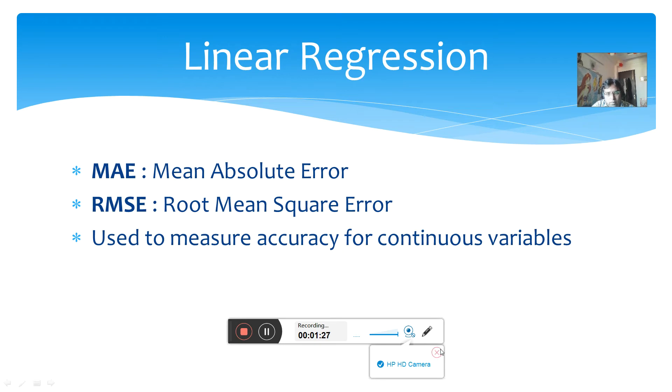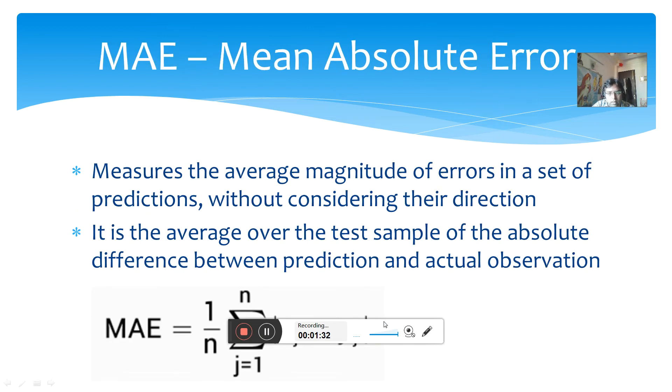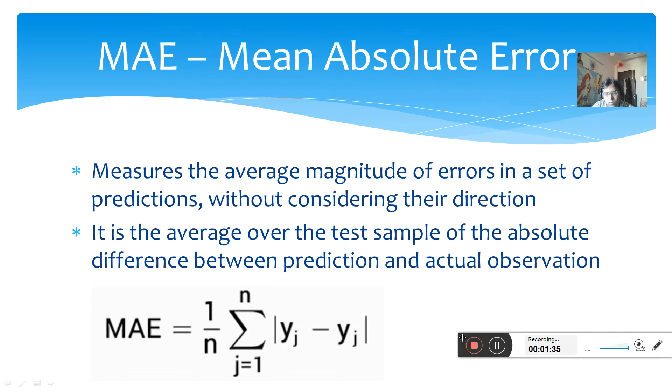Now talking about MAE, MAE stands for Mean Absolute Error. Basically, if we go by the definition, it measures the average magnitude of errors in a set of predictions. It takes the average of the errors in a set of predictions without considering the direction, whether the predicted value is greater than the actual value or lesser than the actual value.